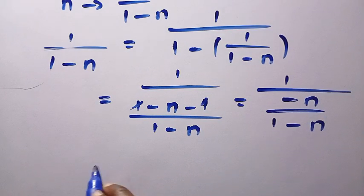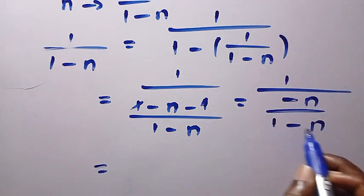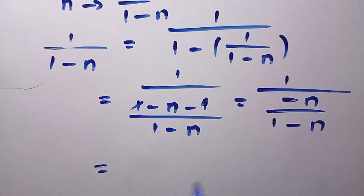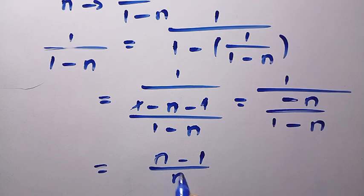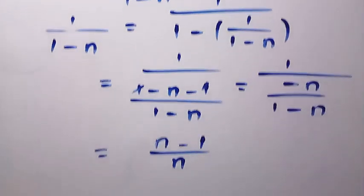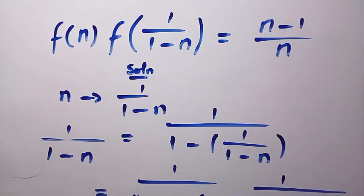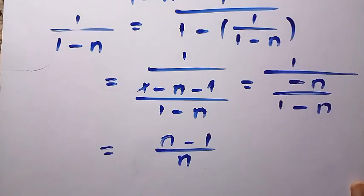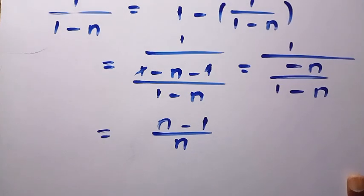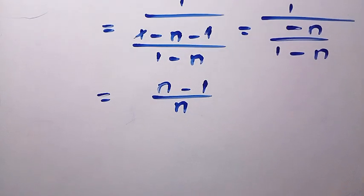By flipping this, we bring the minus up and get (n minus 1) divided by n. So that is what we have for the whole of this side. Now let's consider the other part, which is (n minus 1) divided by n — we try to replace every single n with 1 divided by (1 minus n).